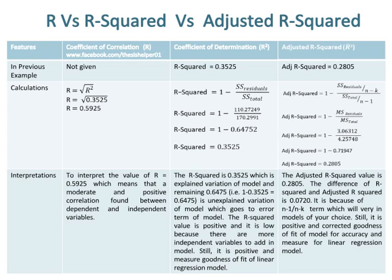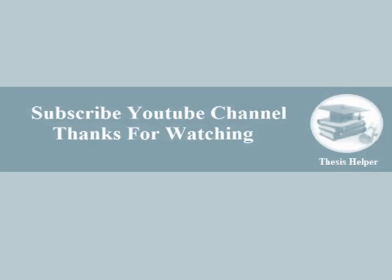The adjusted R-squared value is 0.2805. The difference between R-squared and adjusted R-squared is 0.0720, which is due to the (n-1)/(n-k) term that will vary across different models. Still, it is positive and represents the corrected goodness of fit for accuracy and is a measure for the linear regression model.